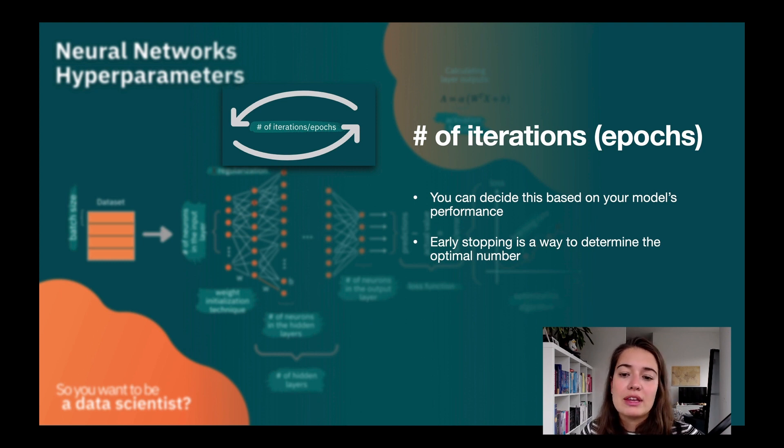So you can either do this manually—you can see one by one which one is better, you can increase it, and at some point maybe you'll see, okay, my validation accuracy is going down, so I'm going to roll back a little bit. Or you can do this automatically with early stopping. We'll see it in some of our exercises.